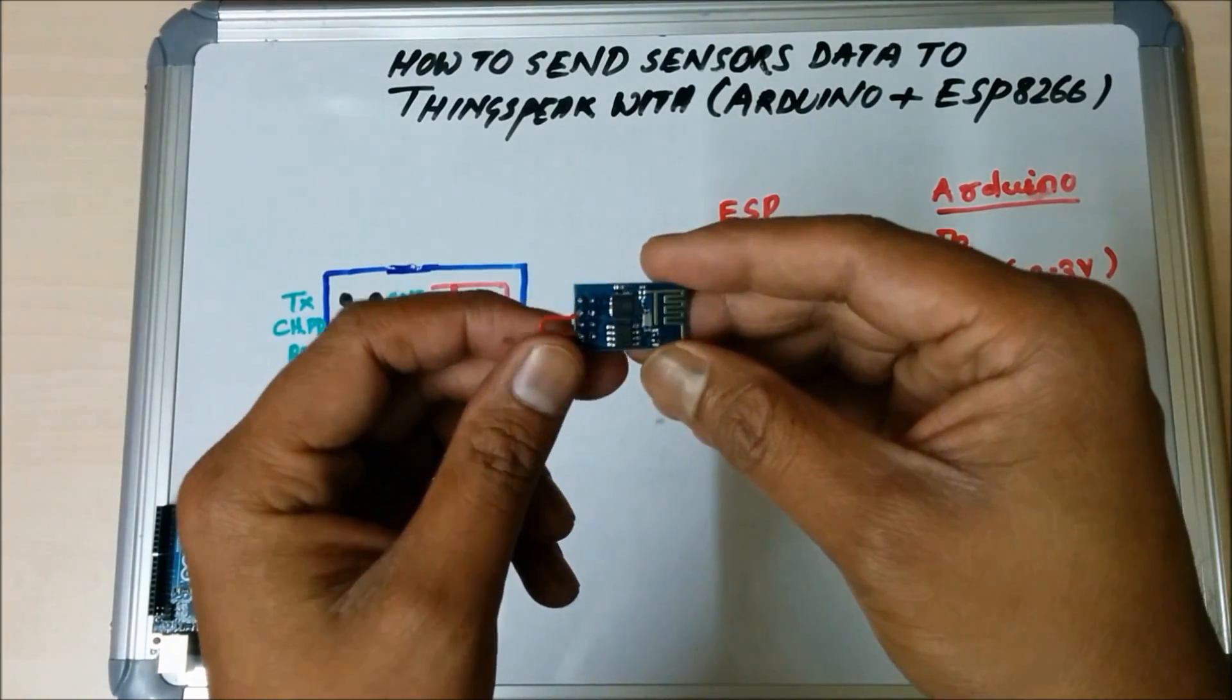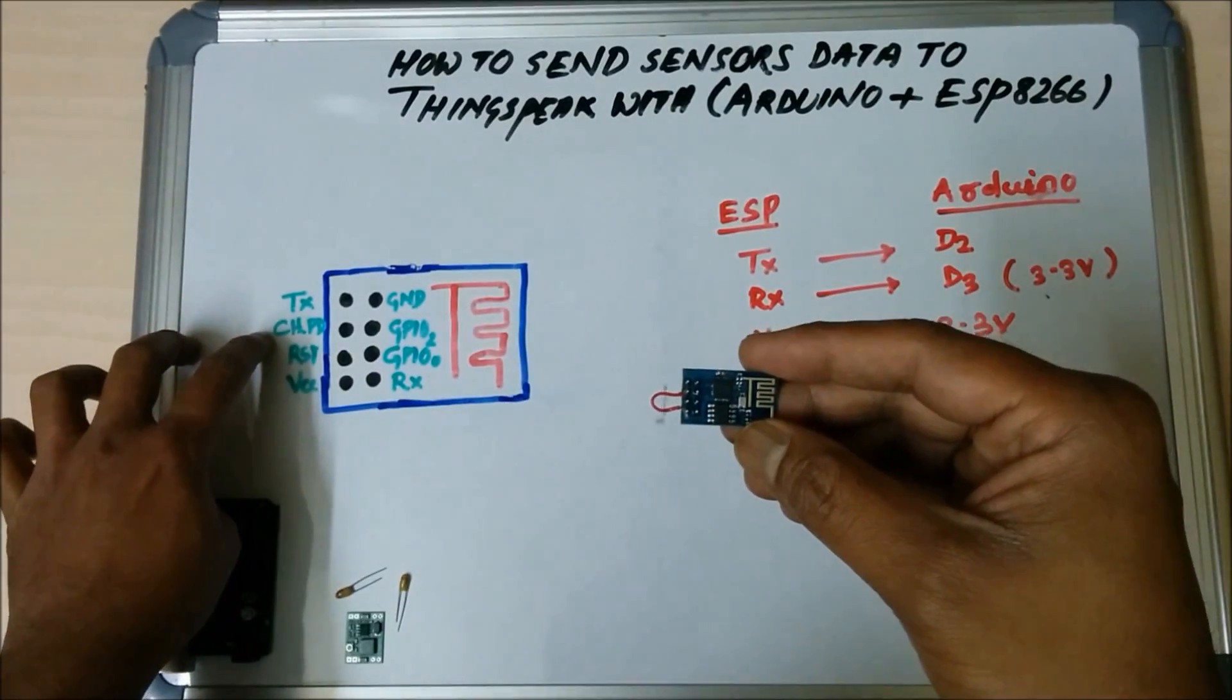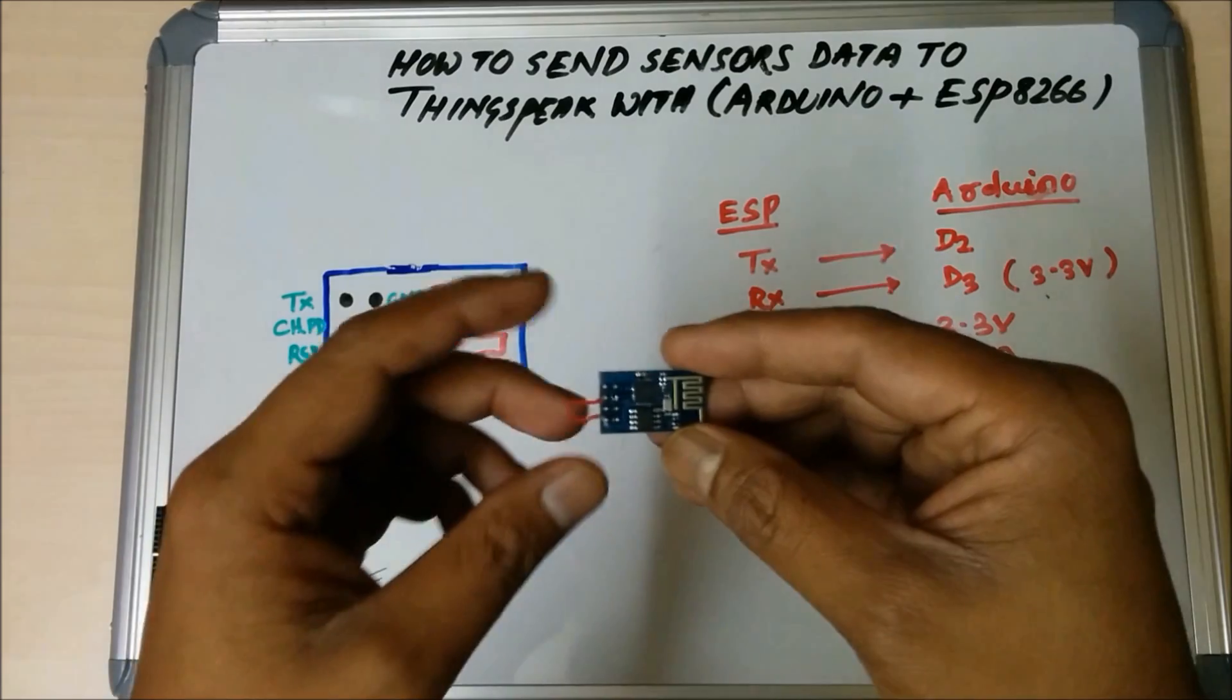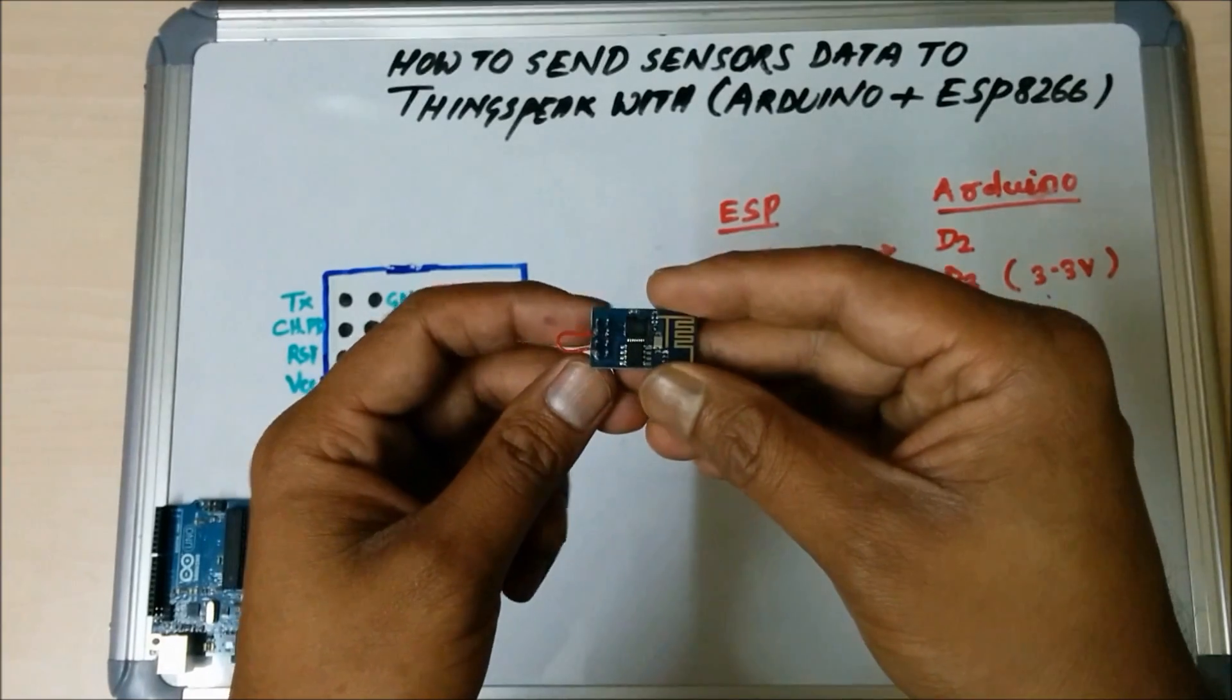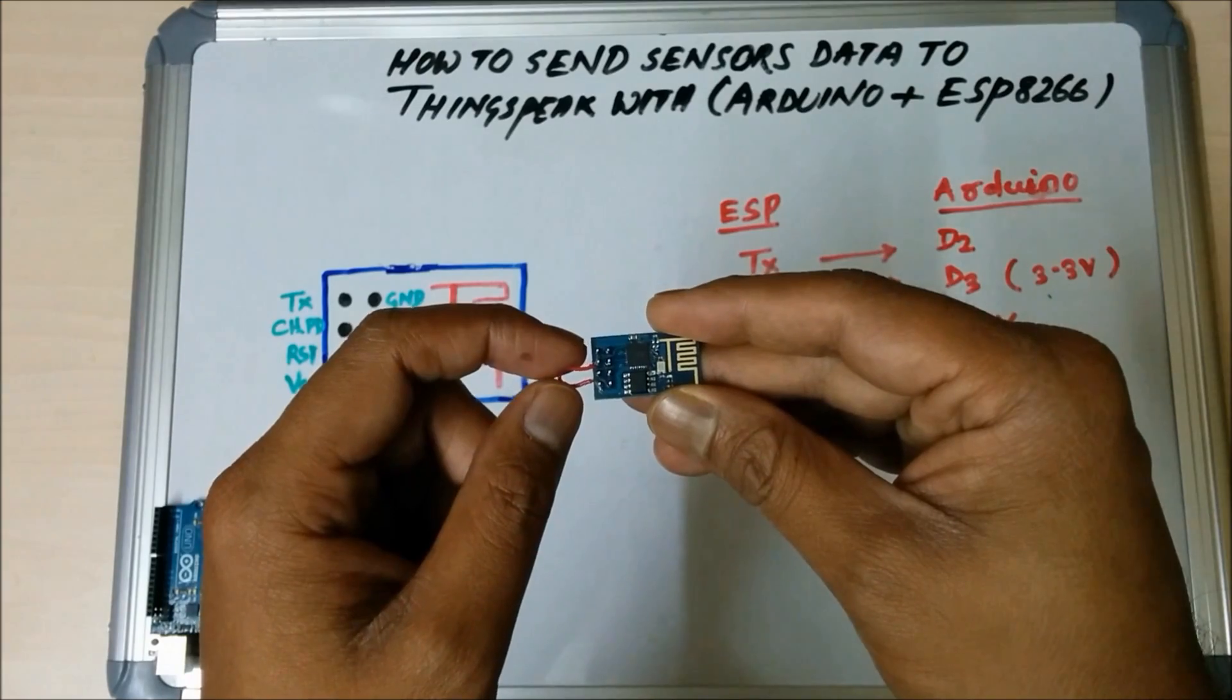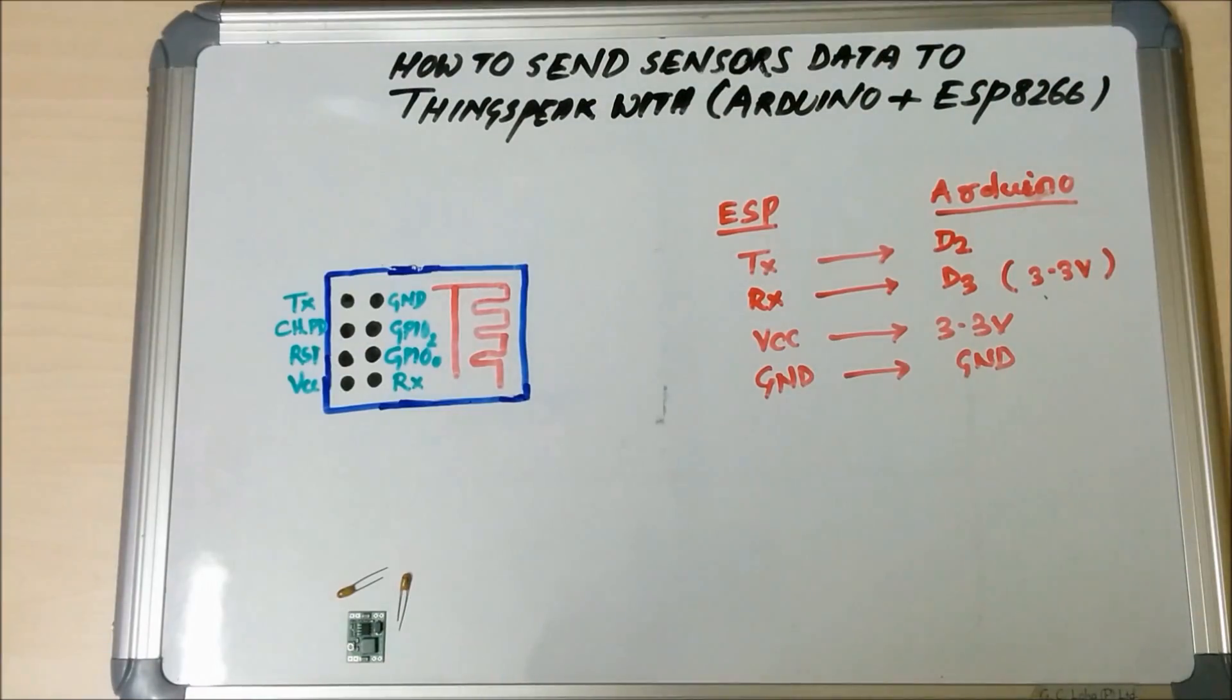In the schematic, you can see the CHPD pin should be hooked up to VCC with a 10K or 1K pull-up resistor. For simplicity, I just soldered a small wire in between CHPD pin and VCC pin. Now, let's see the schematics.